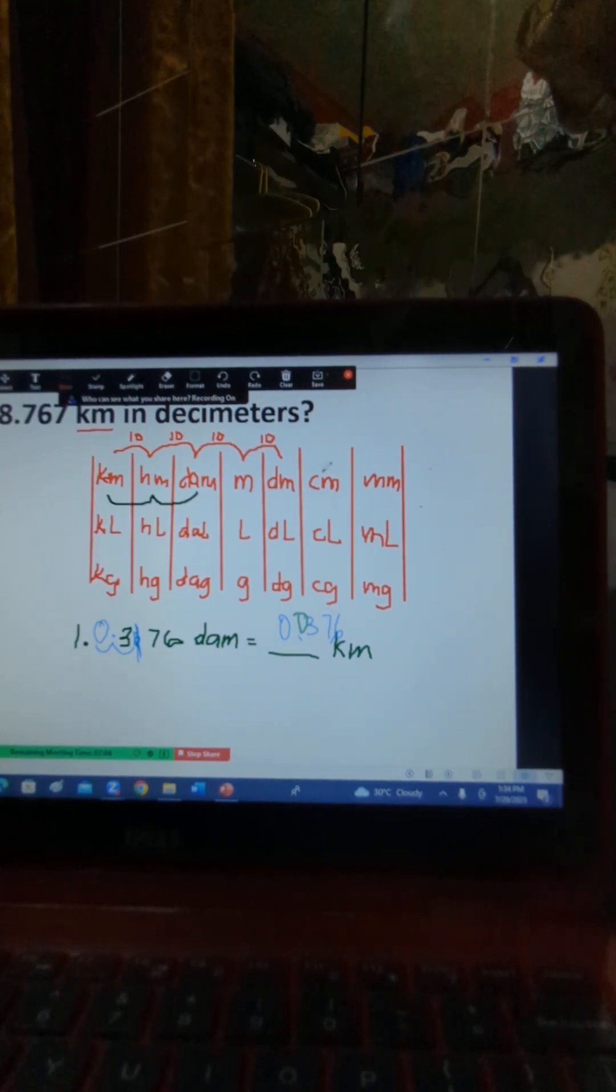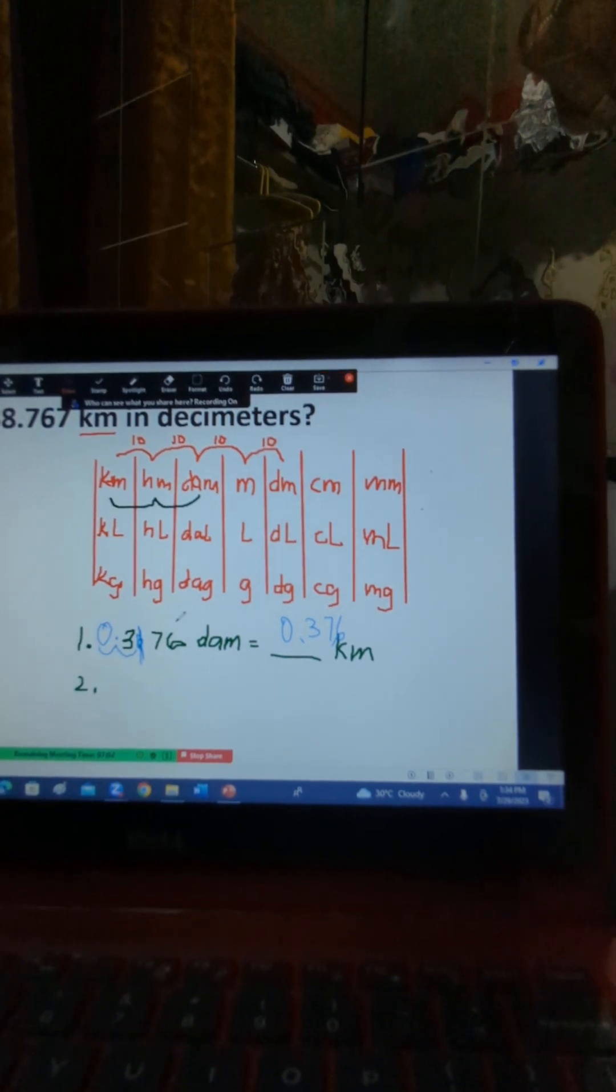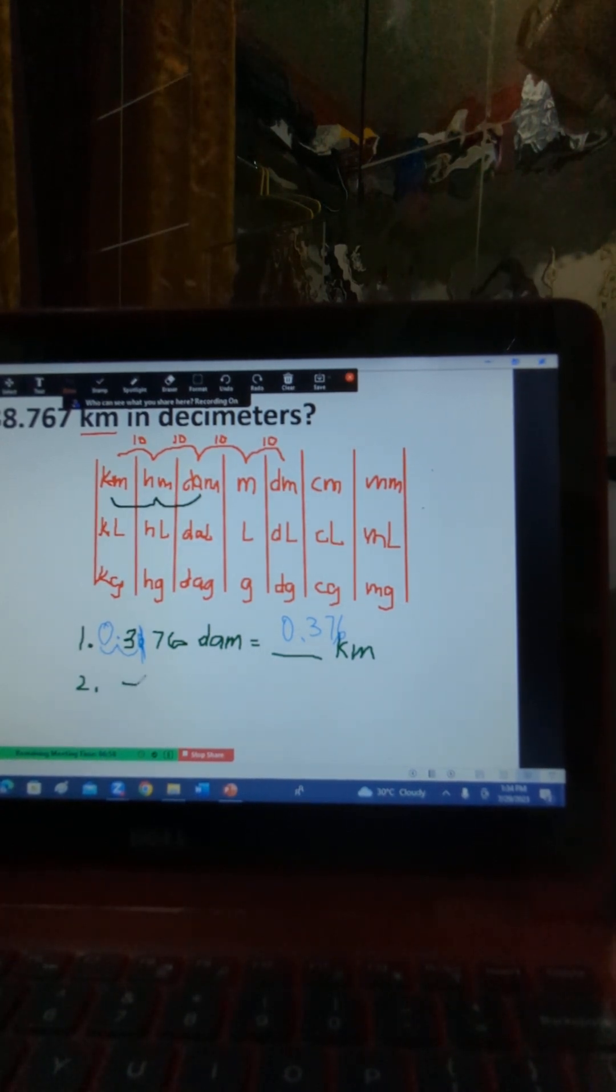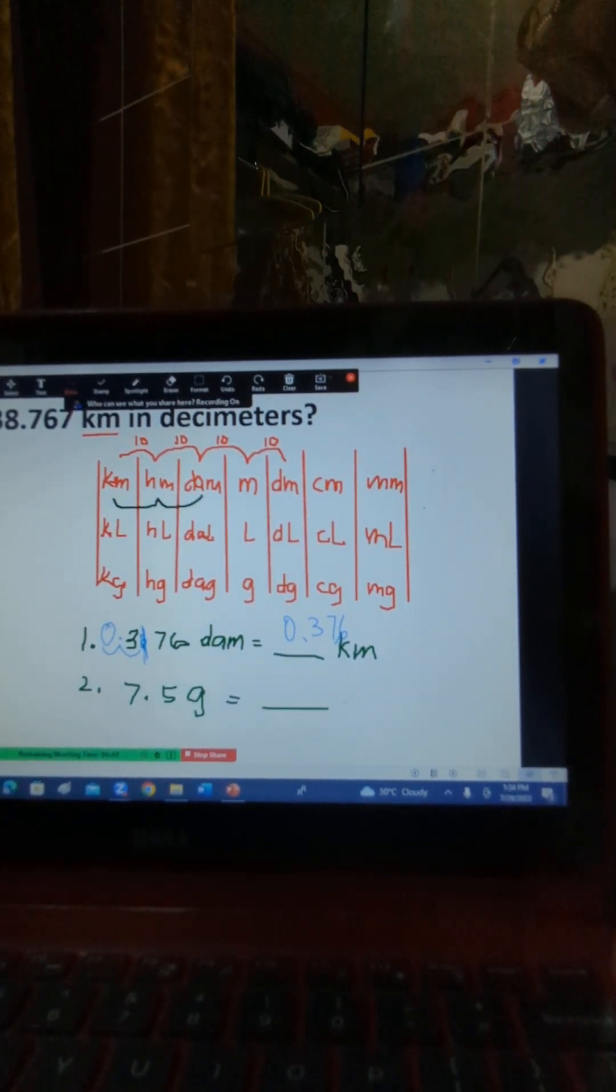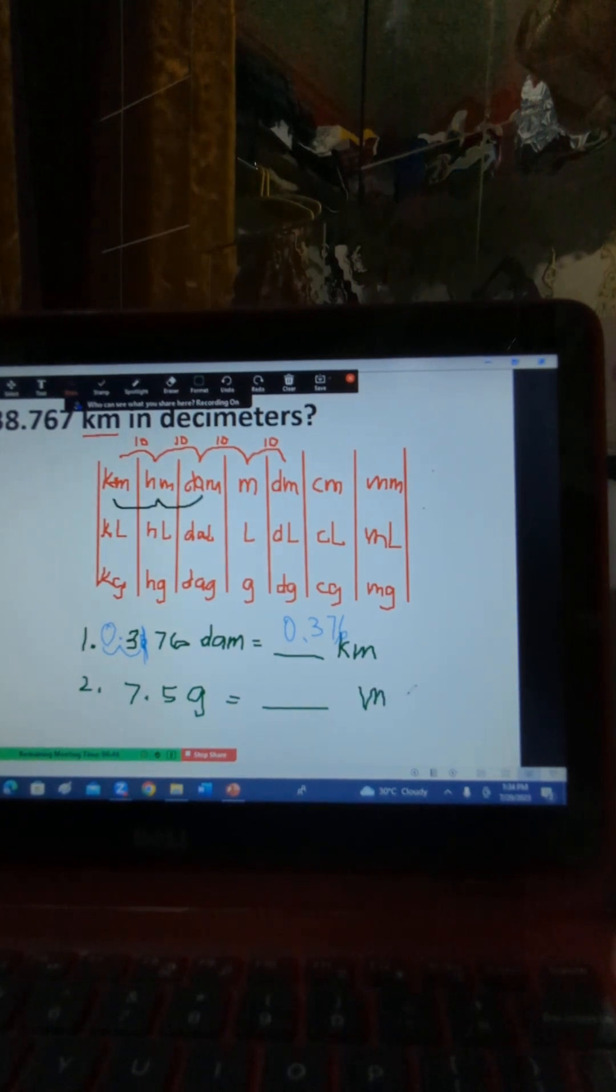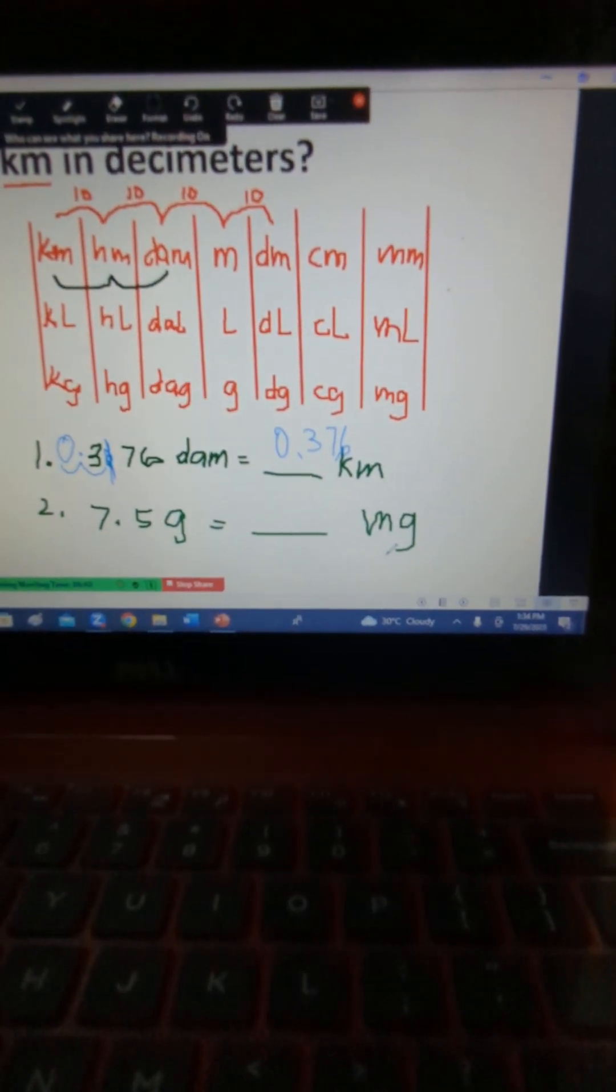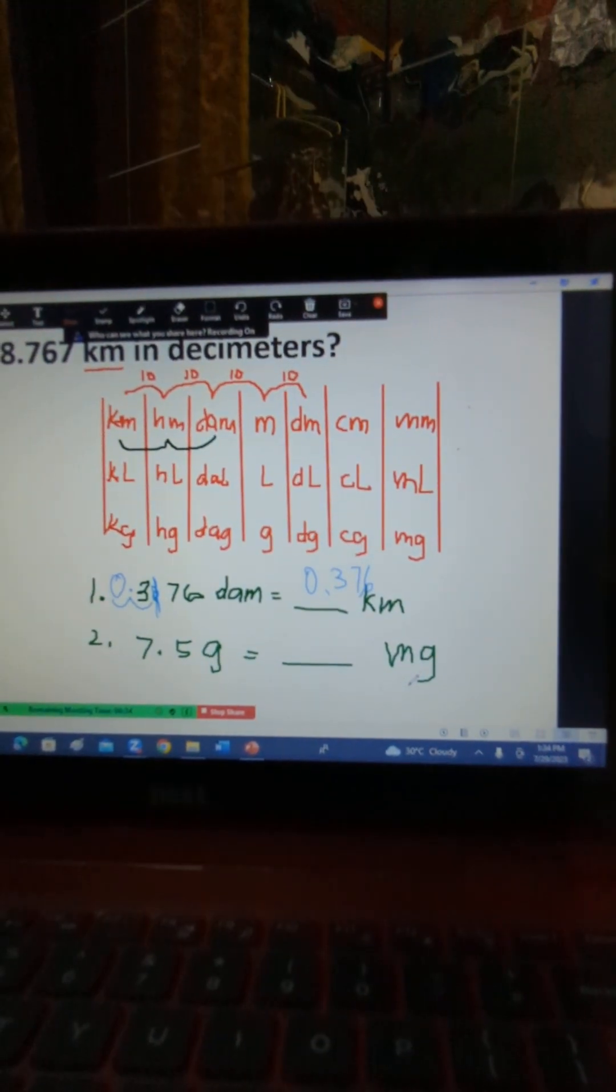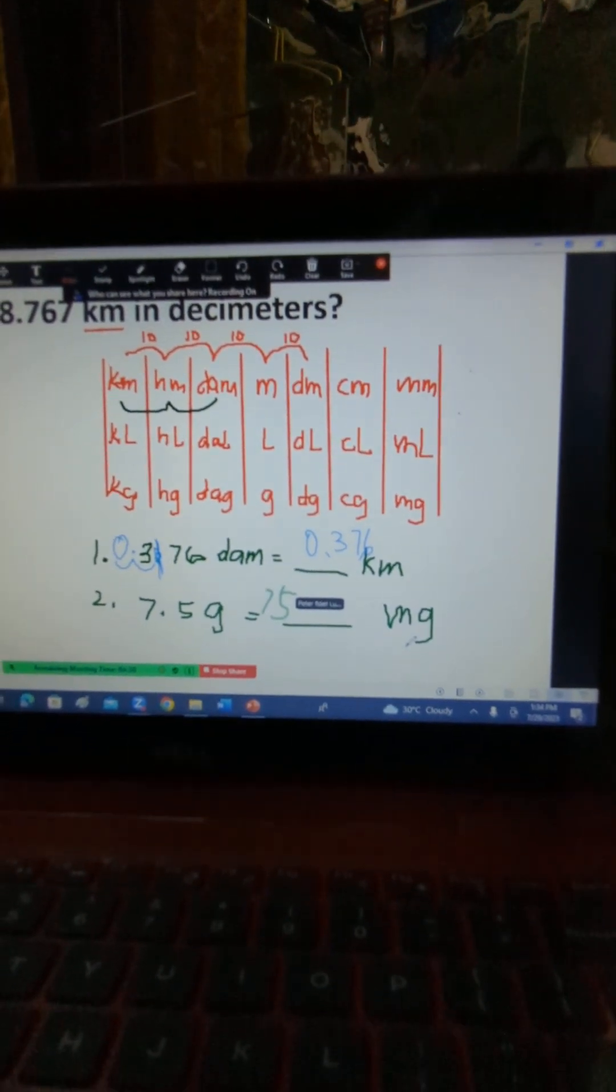That's the reason why this table is very important. Para it will become faster when you do the conversion. Okay, that is also applicable. Like for example, you have 7.55 grams and you want to get the equivalent of this into milligram. What will you have there? 7.5 grams to milligrams. That's a measure of weight. Seven, five, and then.